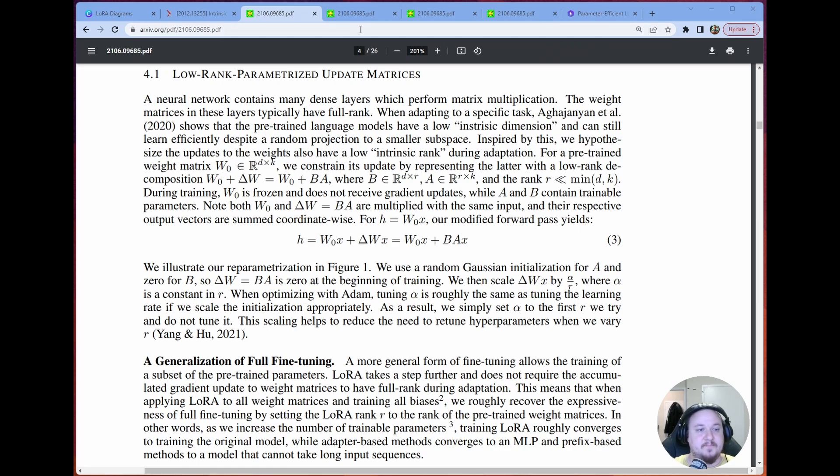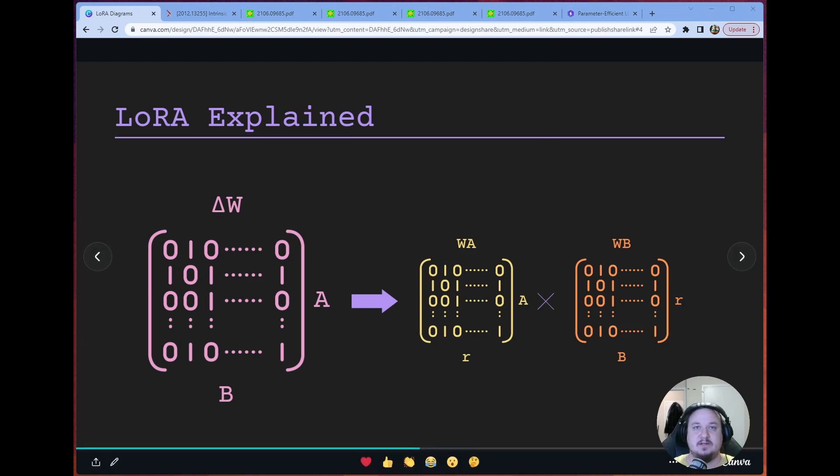And that's exactly what the LoRa paper says. You have this initial weight matrix of D by K, and then you would add the Delta W. In this case, Delta W would be your full weight update matrix. But instead we can represent Delta W by B and A, so the product of B and A, where B is a D by R matrix, A is R by K matrix, and then R is less than the dimensions of the original matrix, which is D by K.